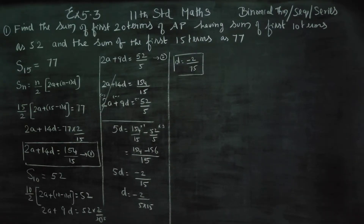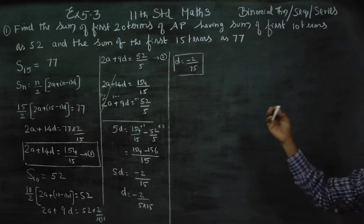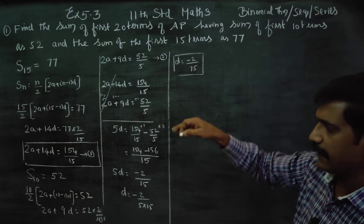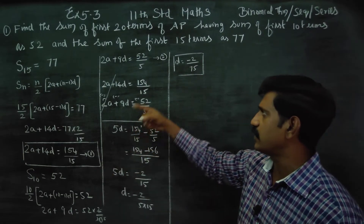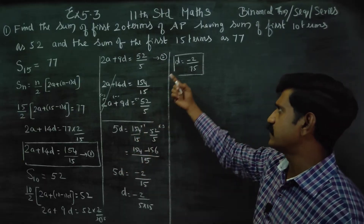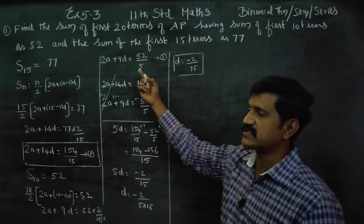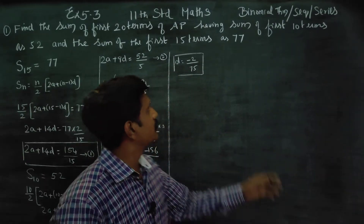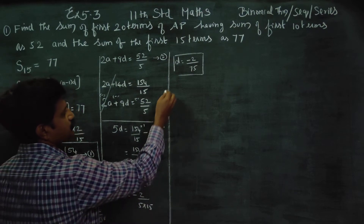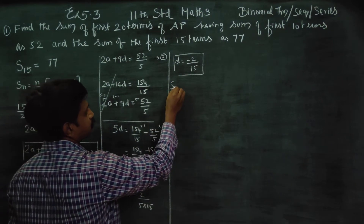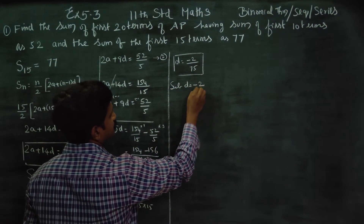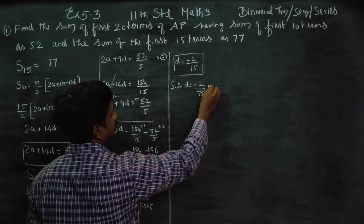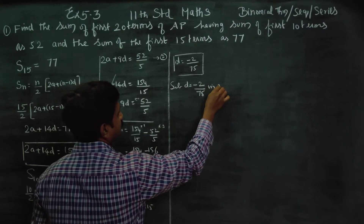After finding the value of D, we have to find the value of A. From equation number 1 or equation number 2, whichever is comfortable, you can substitute. I am going to substitute D equals minus 2 by 15 into equation number 2.